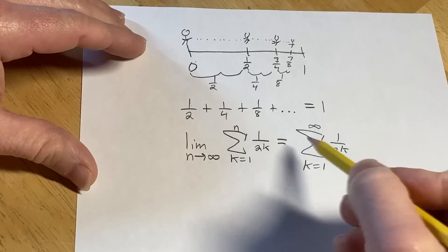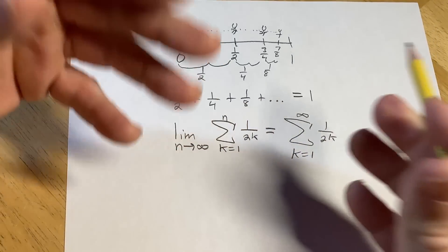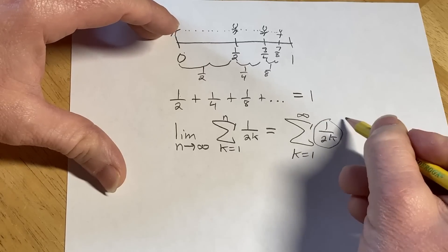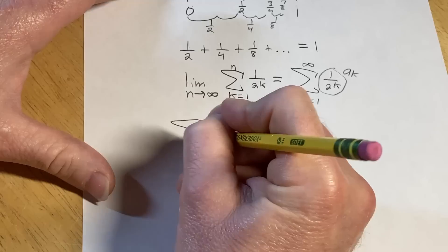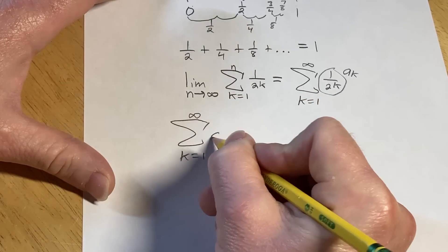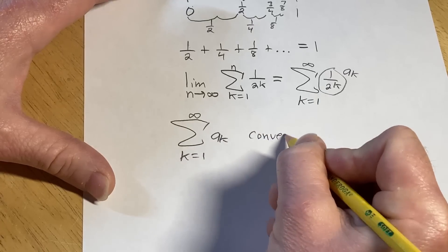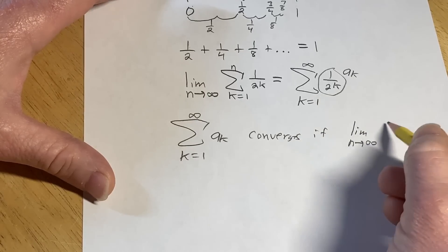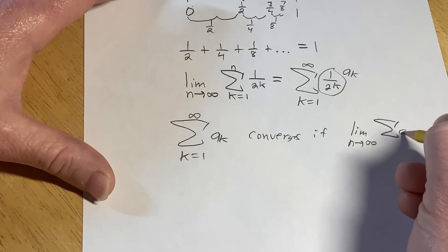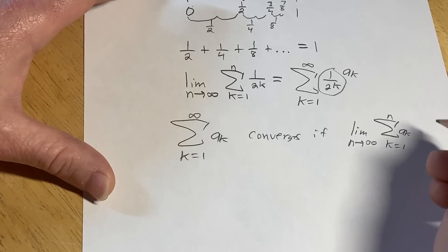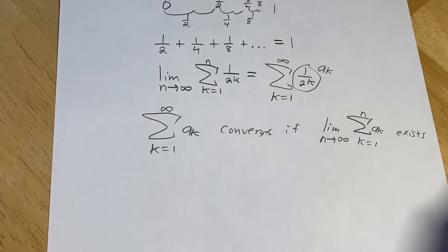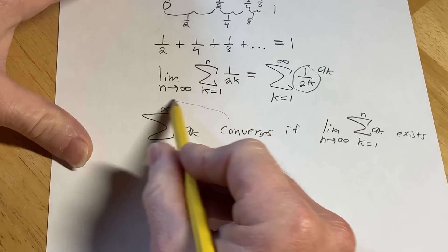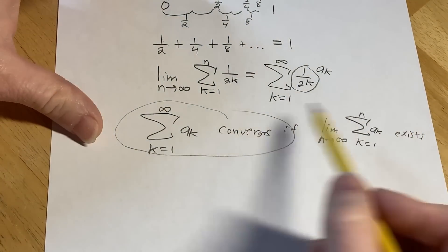Whenever this is equal to a number, we say that the infinite series converges — that's how it's defined in mathematics. In a math book, instead of this specific example, it would have the symbol a_k. So it would say something like: this infinite series that runs from 1 to infinity of a_k converges if the limit as n approaches infinity of this sequence — which is the sum of a_k as k runs from 1 to n — exists. In other words, it's equal to a number. That's the definition of convergence. We say that this infinite sum exists — in other words, converges — if it's actually equal to a number, meaning if this limit exists.